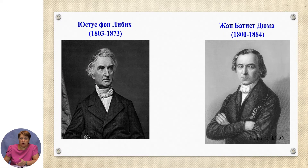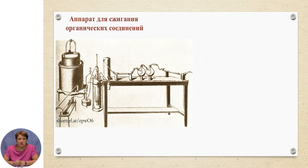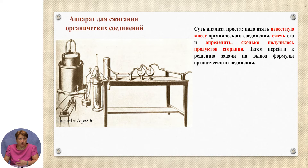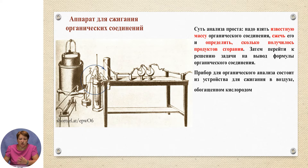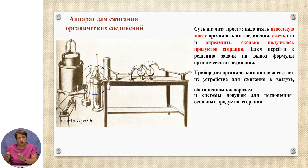The founders of the methods for determining the molecular composition of substances are considered to be two scientists: Justus von Liebig and Jean-Baptiste Dumas. The principle of the combustion apparatus works as follows: a known mass of organic substance is burned and the amount of combustion products formed is determined. Calculations are then made based on these experimental results. The device consists of a combustion unit — note the diagram — and traps for absorbing the combustion products, namely carbon dioxide and water.